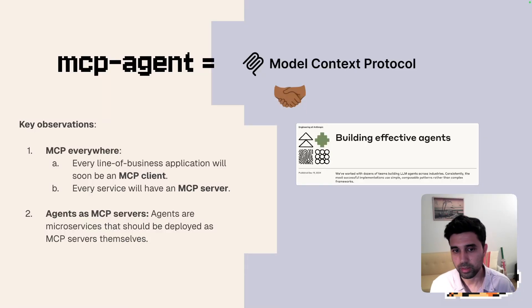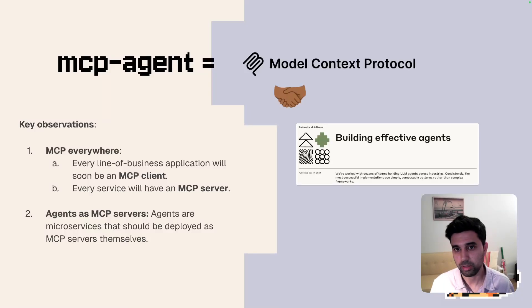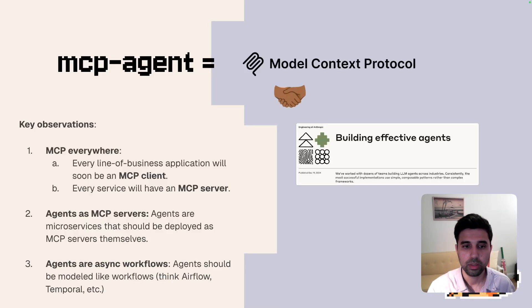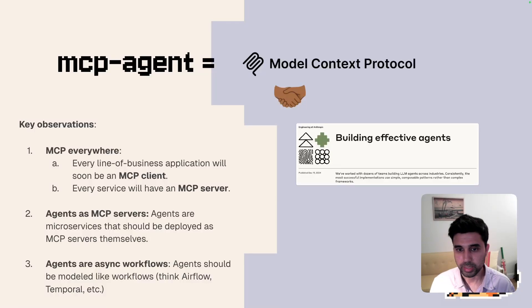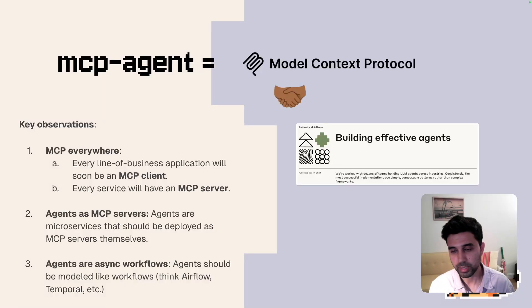Deploying agents as MCP servers gives a lot of benefits for how multi-agent interactions can work. The last part is that agents are async workflows and should be modeled as such, because they can be paused, resumed, retried, and you may have a human in the loop. That's really a workflow orchestration that's asynchronous, instead of something that's happening in your chat session in-process.